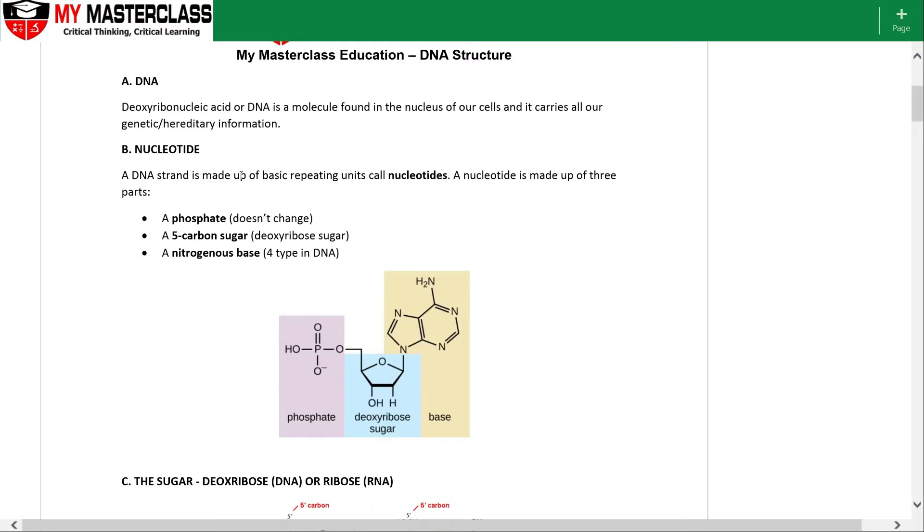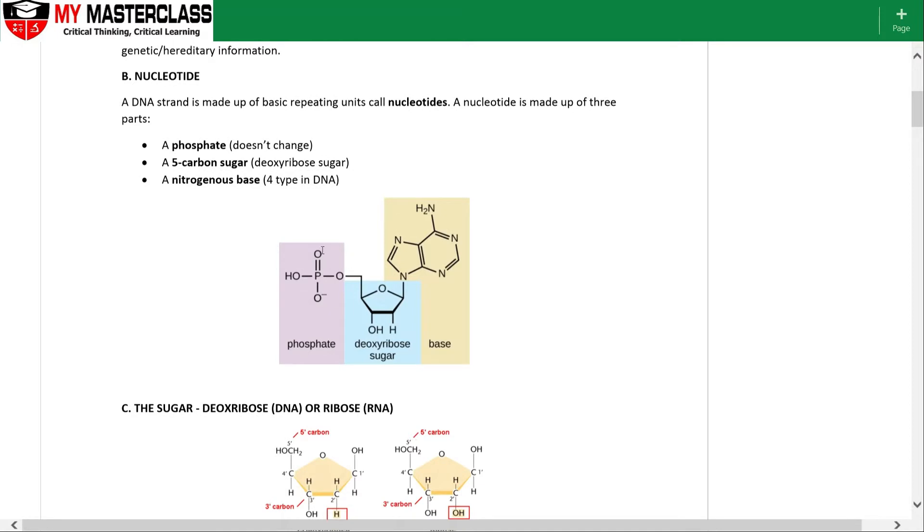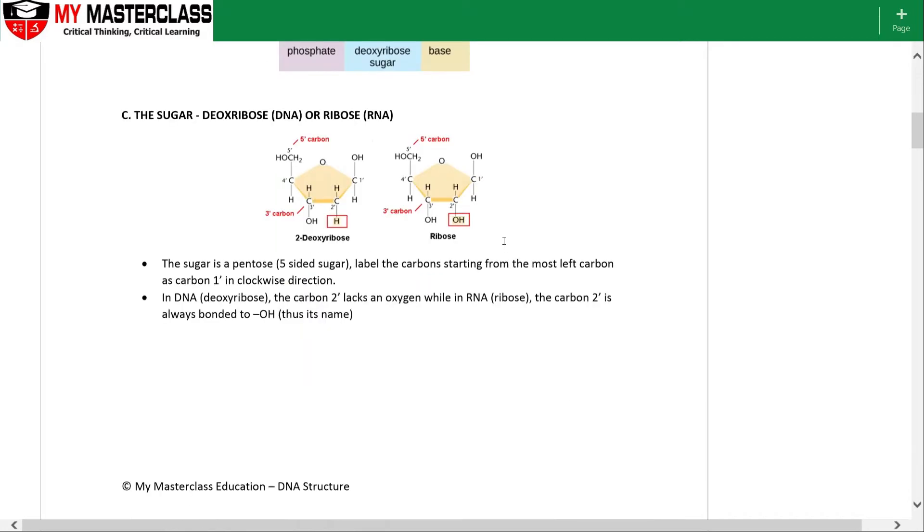Imagine you have got millions of your DNA strand itself and inside itself it contains all these nucleotides. Now each of these nucleotides is made up of three different components. We have got the phosphate group here, the deoxyribose sugar, and also the nitrogenous base. There are four different types of nitrogenous bases in your DNA.